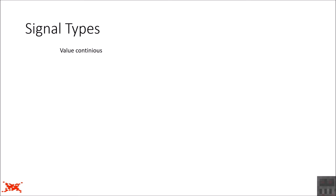So first let's talk about the different signal types. When you are trying to characterize a signal, you can do this in many ways. One way is to talk about the values it can have. Those values can be continuous or they can be discrete. Discrete value means that the signal can have only very specific values.